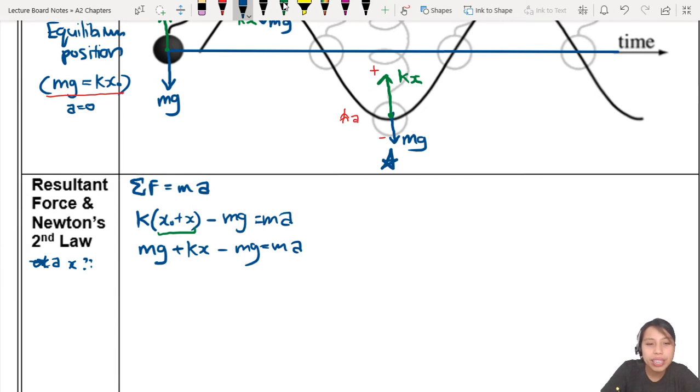And, mg minus mg is very convenient. Ayah, Kx equals to ma. We have found a relationship between a and x already. Now, what's the next step?